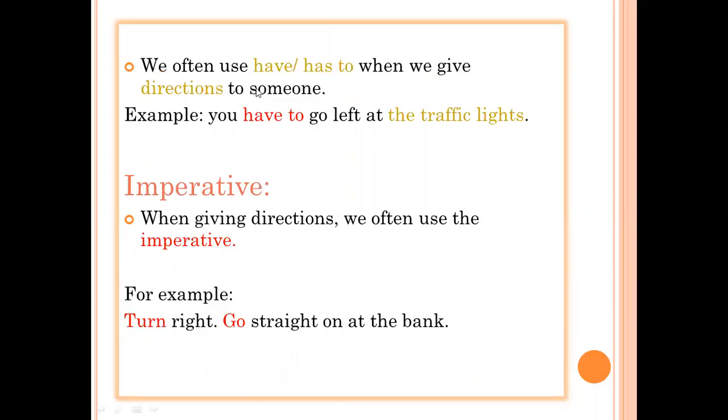We often use have or has to when we give directions to someone. For example, you have to go left at the traffic lights. So here we have the traffic lights—it's a direction, so we should use have to.